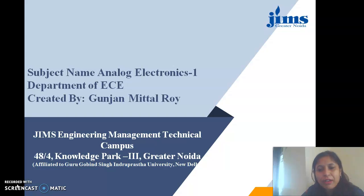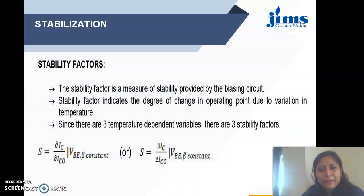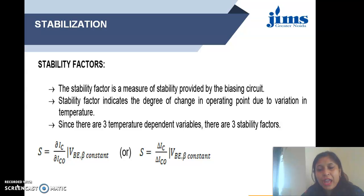Now moving on further on this topic, we have the next factor which is called stability factor. As mentioned in the previous video, we explained about the Q point, which should always lie at the middle of the load line. But due to various factors such as leakage current, temperature, VBE, and beta, the Q point shifts. This shifting of the Q point results in inappropriate or distorted output. So we need stabilization techniques to keep the Q point stable at the middle of the load line.